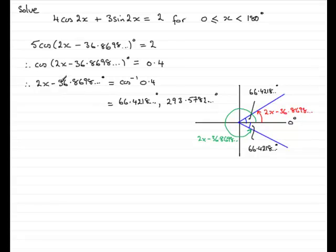So, what we need to do now is add 36.8698 to each of these two angles, and that would give us what 2x is equal to. So, if we add this to the 66 odd degrees, first of all, what we get is 103.2916, and so on, degrees. And if we add the 36 odd degrees to the 293 odd degrees, we're going to get 330.448, and so on, degrees.